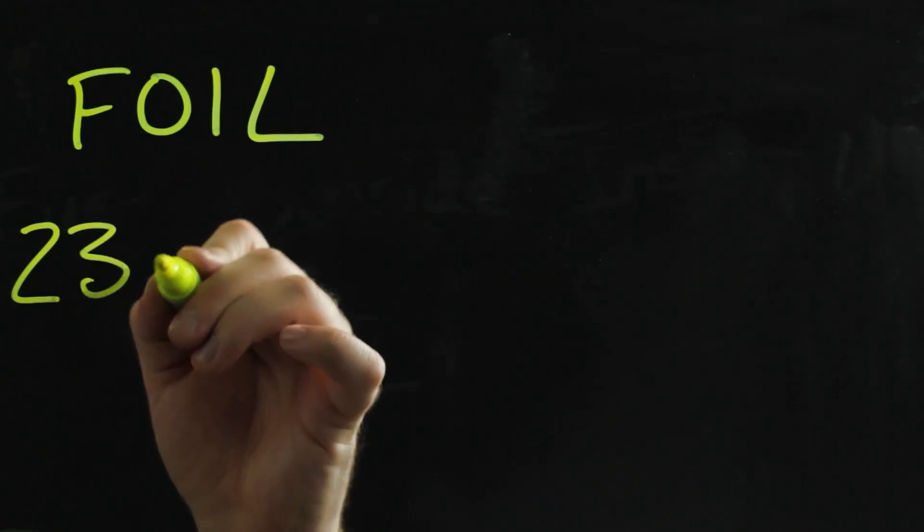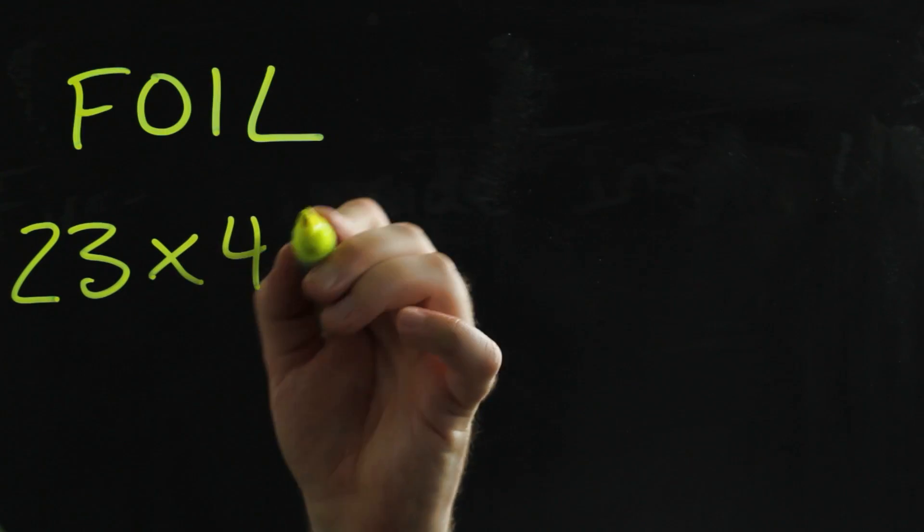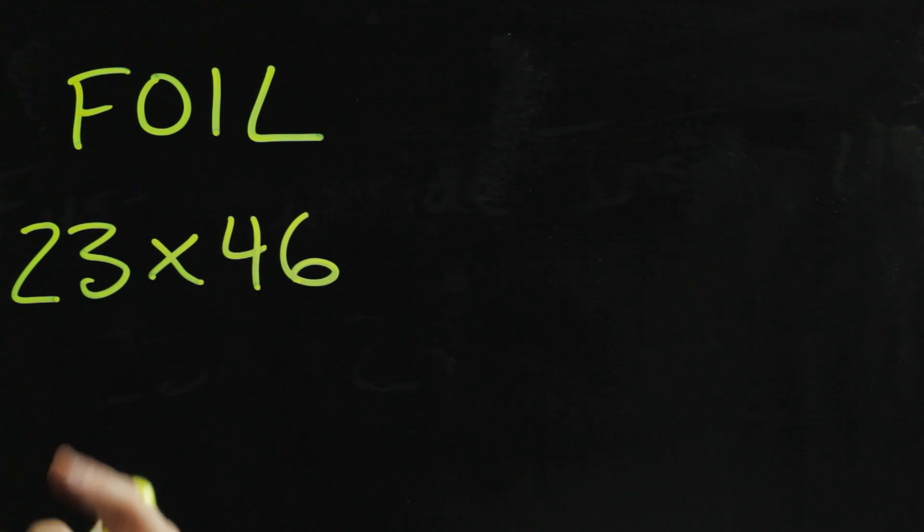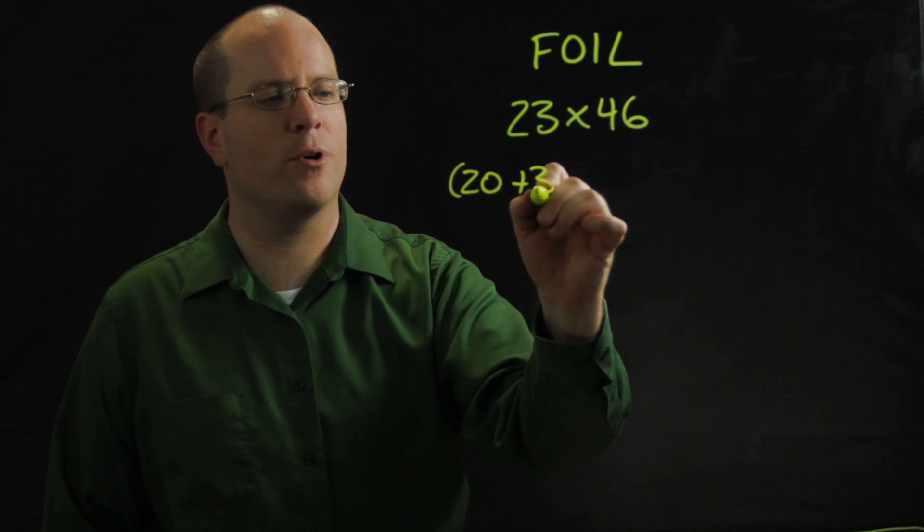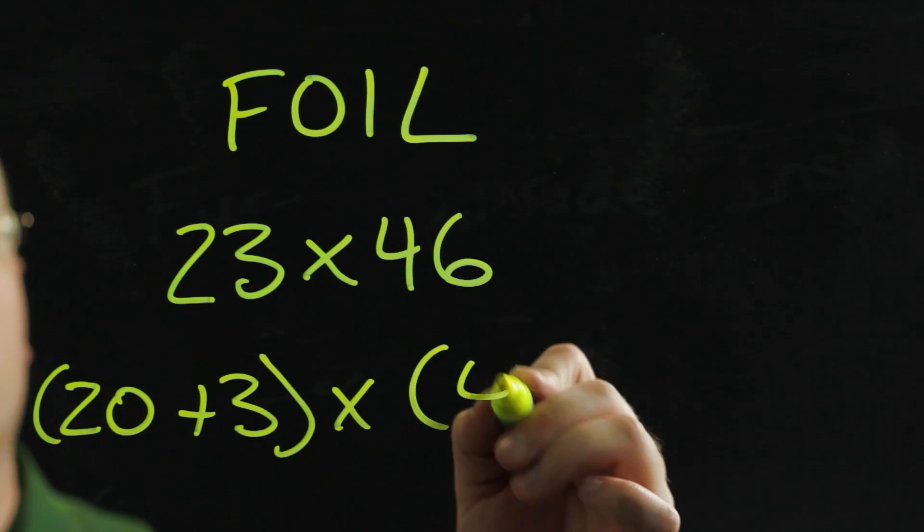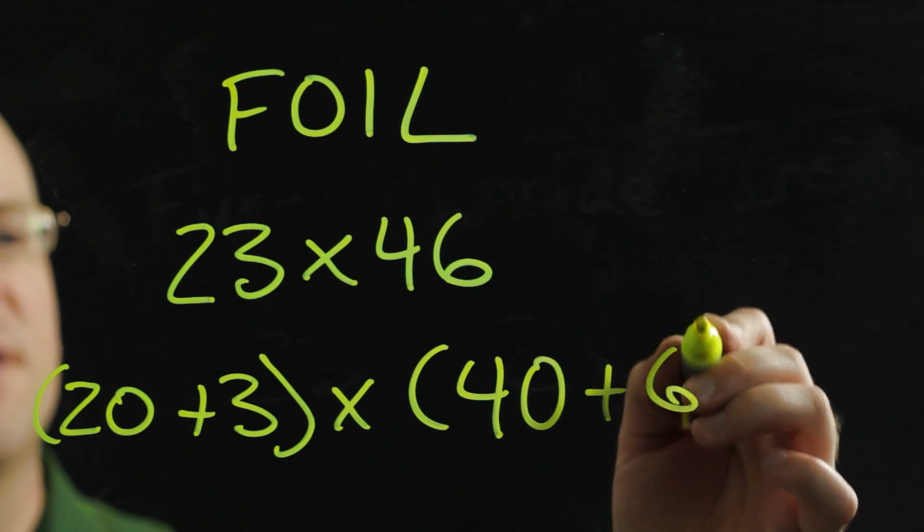So let's say I was multiplying 23 times 46. The first thing I'm going to do is break these up into their expanded notation. So 20 plus 3 times 40 plus 6.